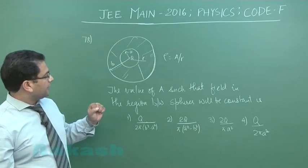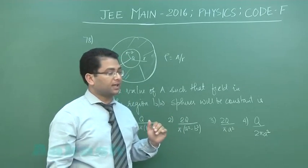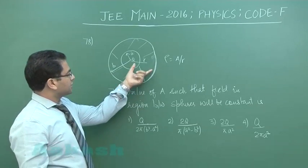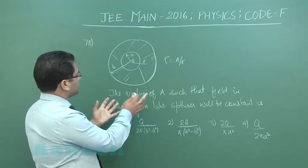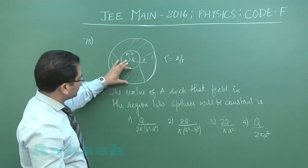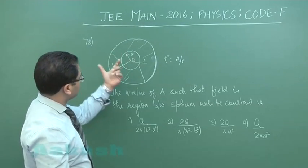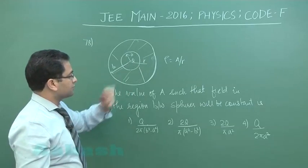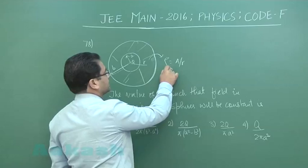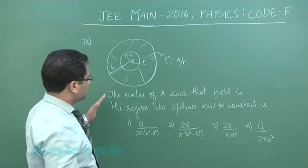Question number 78 is a good question involving some thought-provoking ideas from electrostatics. There is a concentric spherical arrangement where inside there is a cavity of radius a, and it is a solid one, so the inner radius becomes a and the outer radius becomes b. r is the distance from the center, and this particular region has volume charge density of a divided by small r.